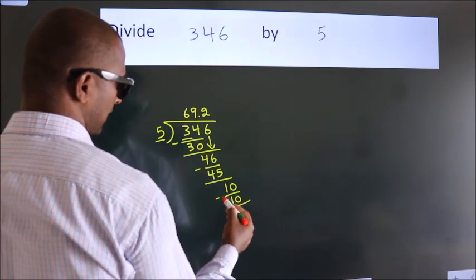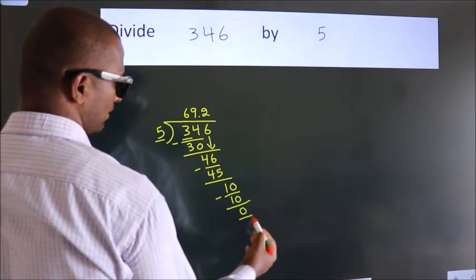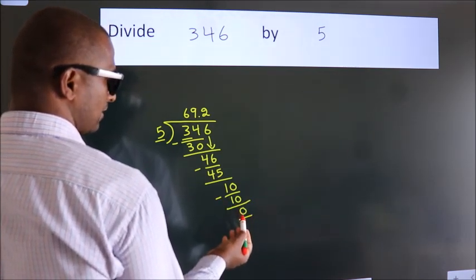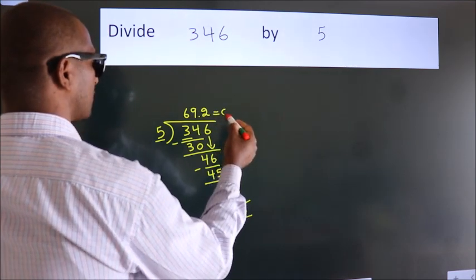Now we subtract. We get 0. We got remainder 0, so this is our quotient: 69.2. Thanks very much.